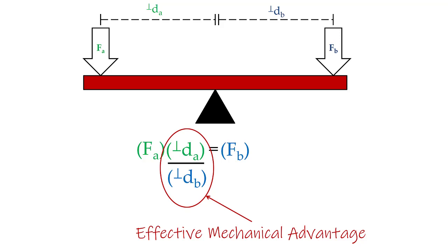Going back to the wrench analogy: if we needed to create greater torque, we just applied that force at a greater distance from the axis of rotation. In essence, that gives us a larger effective mechanical advantage.